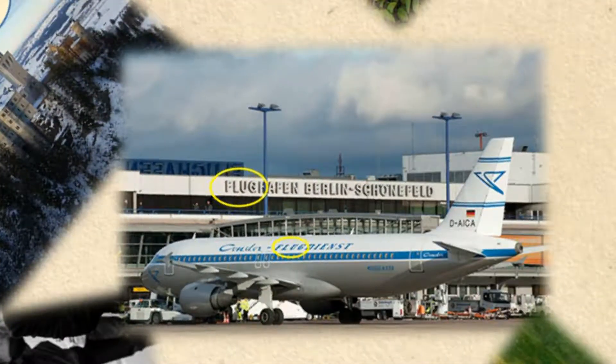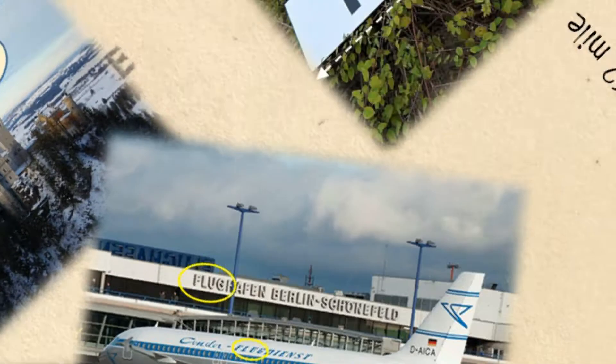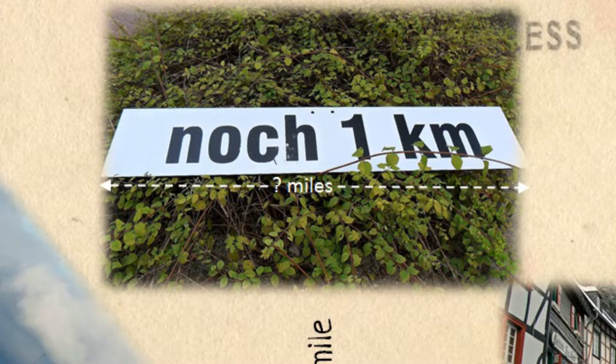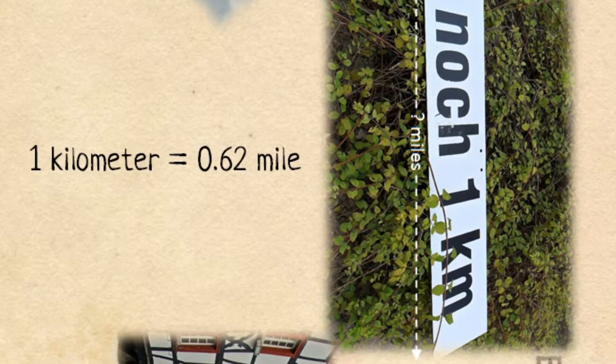We can convert units of measure like we convert words in different languages. For example, while you're in Germany, suppose you travel one kilometer. How many miles is this? You have to convert kilometers to miles to find out. You look it up and find out that one kilometer is about 0.62 mile. So if you've gone one kilometer, you've traveled a little more than half a mile.